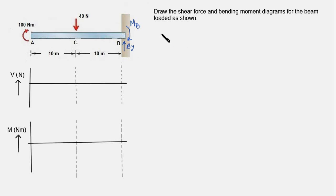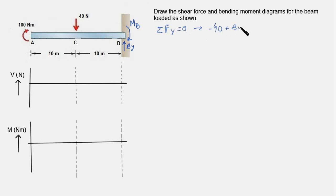We consider first the equilibrium equation sigma FY equal to 0, which gives us minus 40 plus BY equal to 0, meaning BY is equal to 40 N acting in the positive y direction.